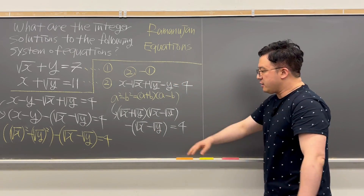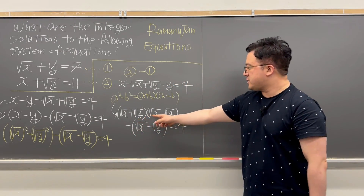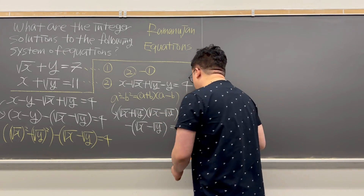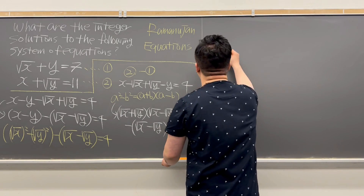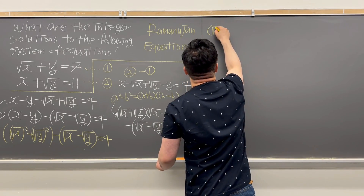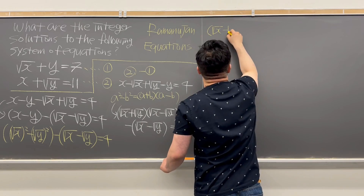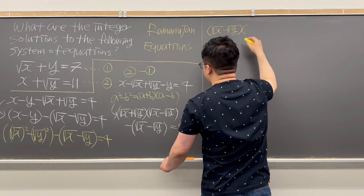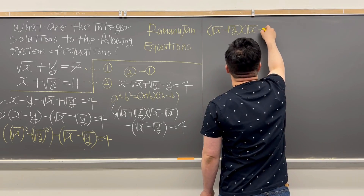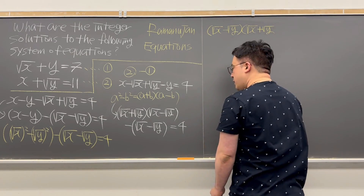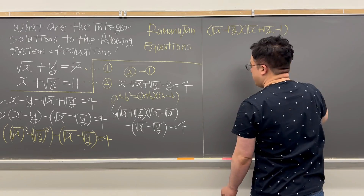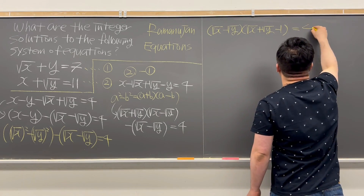Looking at the left-hand side, we have (√x − √y) as a common expression, so we can factor it out. Then we have (√x − √y) multiplied by (√x + √y − 1), and that is equal to 4.